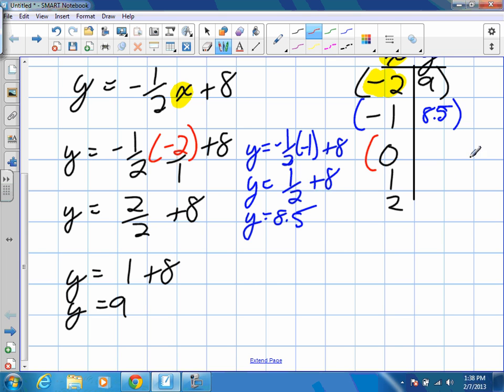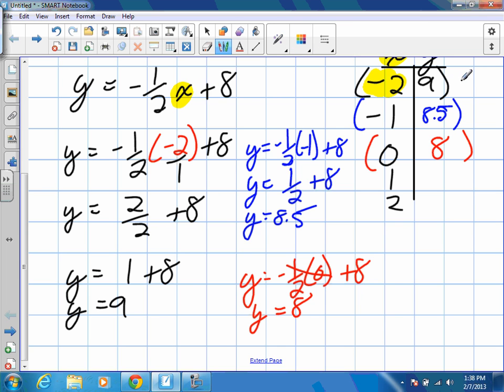We'll do 0 in red. y is equal to negative one half times 0 plus 8. What is 0 times negative one half going to be? 0. That's right. So we're going to be left with y is equal to just 8. Are you noticing a pattern as I go through this? So what's the next value going to be? And then? Great.